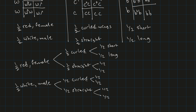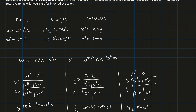Multiplying the probabilities through: one half (red female) × one half (curled) × one half (short) = one eighth. So there's a one-eighth probability of being a red female with curled wings and short bristles. Similarly, one half (white male) × one half (straight) × one half (long) = one eighth. Every single phenotype combination has a one-eighth probability. That gives us the genotype and phenotype ratios for the F1 progeny in this trihybrid cross.